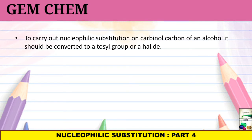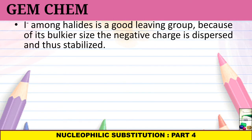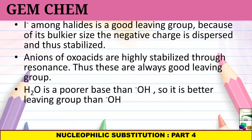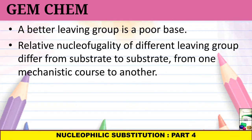Now, we see another example. We can understand that among the halides, I minus halide is the good leaving group because of its bulkier size and the negative charge which has been dispersed and thus stabilized. We also know that anions of oxoacids are highly stabilized through resonance and they are good leaving group. And the last thing is that water is a poorer base than OH-. So, it is a better leaving group than OH-.